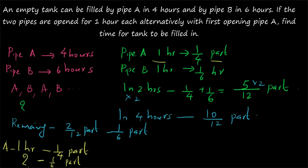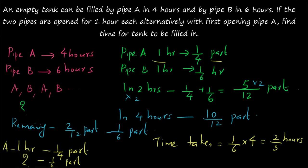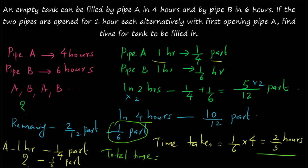After four hours, pipe A opens next. Pipe A fills 1/4 part in one hour, but only 1/6 part remains. The time for pipe A to fill 1/6 part is (1/6) divided by (1/4), which equals 1/6 times 4, giving 2/3 hours. So the total time is 4 plus 2/3, which as a mixed fraction is 4 and 2/3 hours.